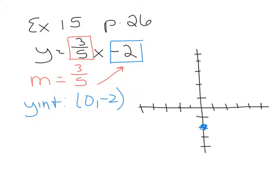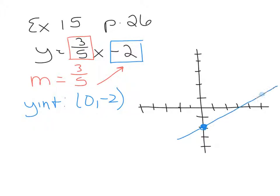From the y-intercept at 0, negative 2, count the slope as rise over run. The rise is 3 — count up 3. The run is 5 — count right 5, since the slope is positive and the line goes uphill. That gives a second point. Connect the dots and don't forget your arrows — you have to have arrows on your lines. That's the graph of y equals 3 fifths x minus 2, with slope 3 fifths and y-intercept at 0, negative 2.